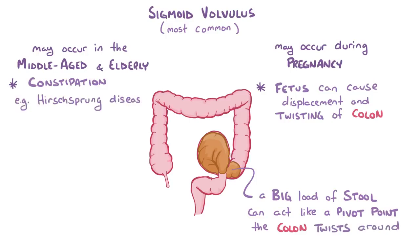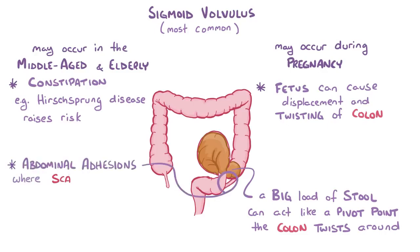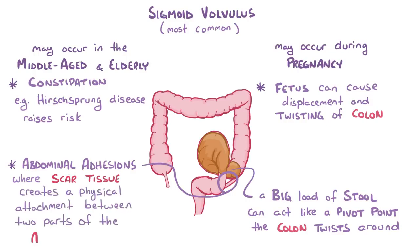Hirschsprung disease, which is a disease of the large intestine that causes severe constipation or intestinal obstruction, raises the risk for developing sigmoid volvulus. In addition, there are also abdominal adhesions, where internal scar tissue creates a physical attachment between two parts of the abdomen, which again serves as a pivot point around which the colon can twist.